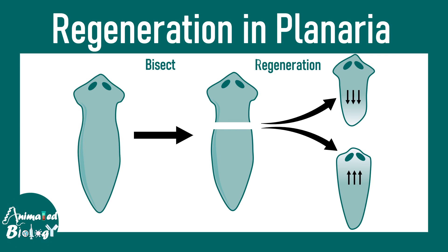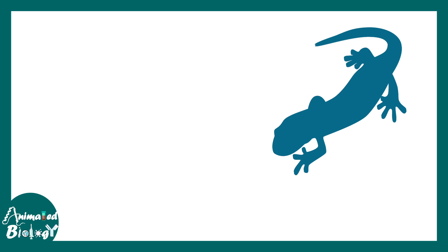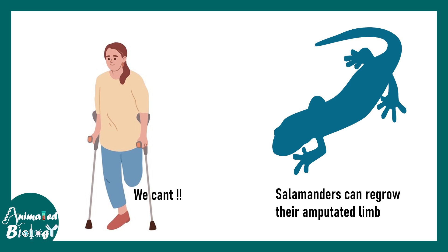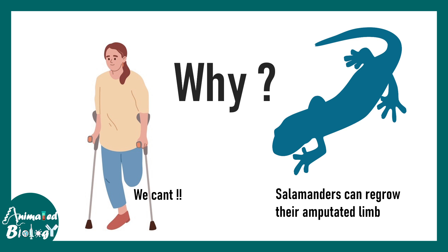In this video we'll be talking about the process of regeneration, and we will take the example of the flatworm planaria to understand it. Many organisms in the animal kingdom have huge regenerative capabilities — for example, the salamander: if you cut the digit of a salamander, it would regrow its digit. But think about us — if we lose our leg in an accident, we can't regrow it. Why is this difference?